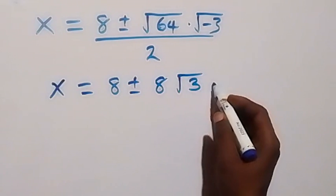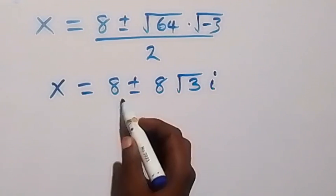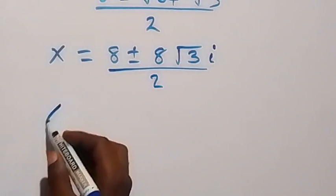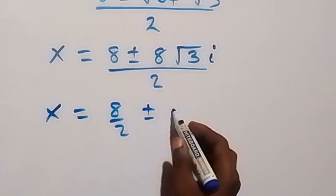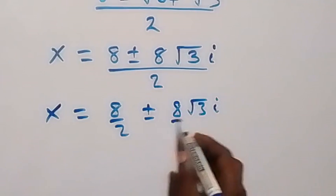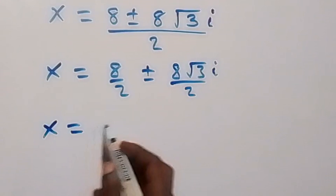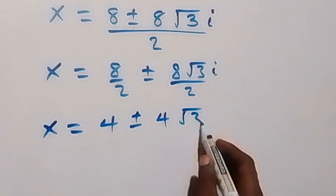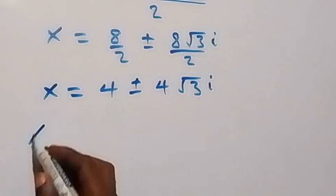This gives us square root of negative 3, which is root 3 times i, so we get x equals to 8 over 2 plus or minus 8 root 3 i over 2, which gives us x equals to 4 plus or minus 4 root 3 i.